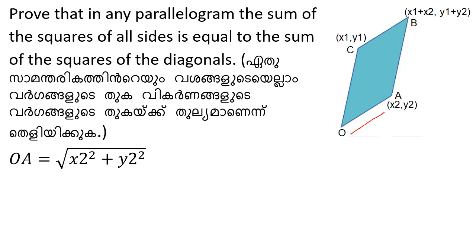We call it a pattern with O as the origin, and points A, B, C as the three points. OA is the original one, equal to the root of x₂ squared plus y₂ squared. The original point is x and y, and O is one, so OA equals the root of x₂ squared plus y₂ squared.